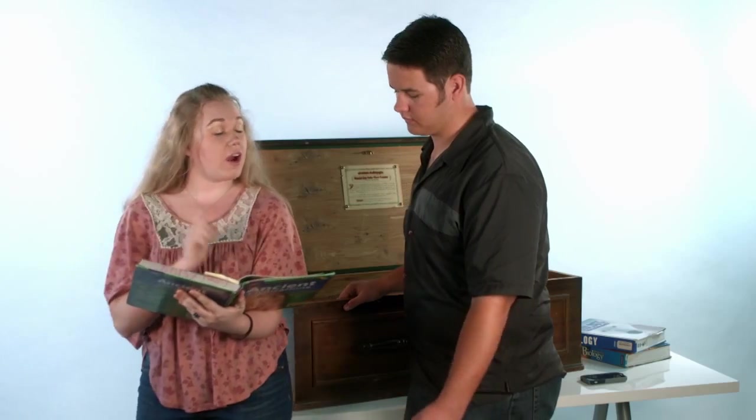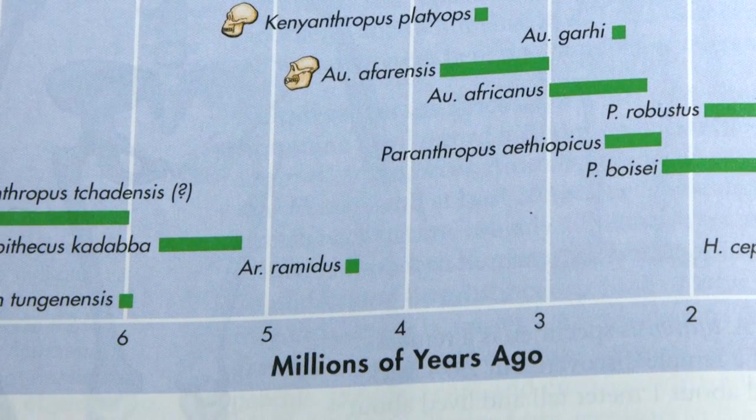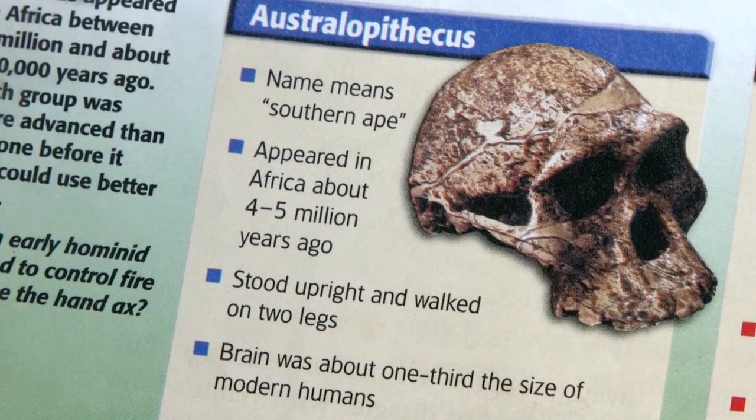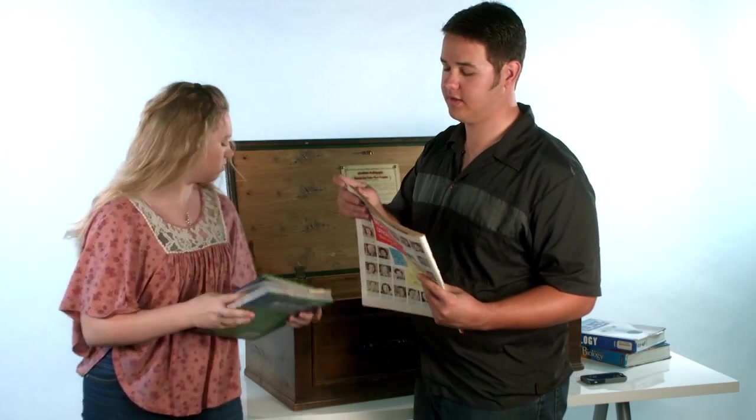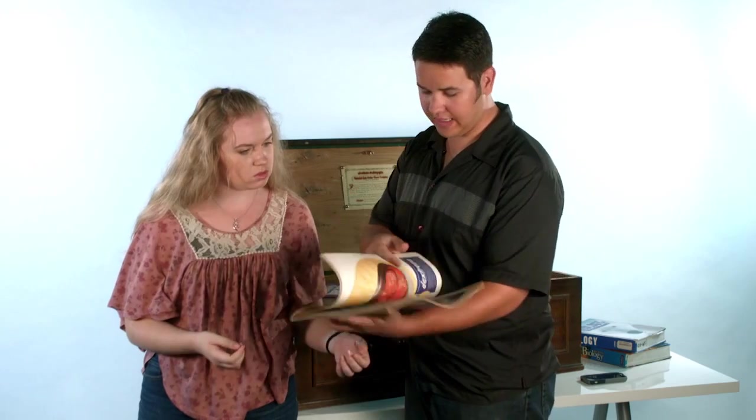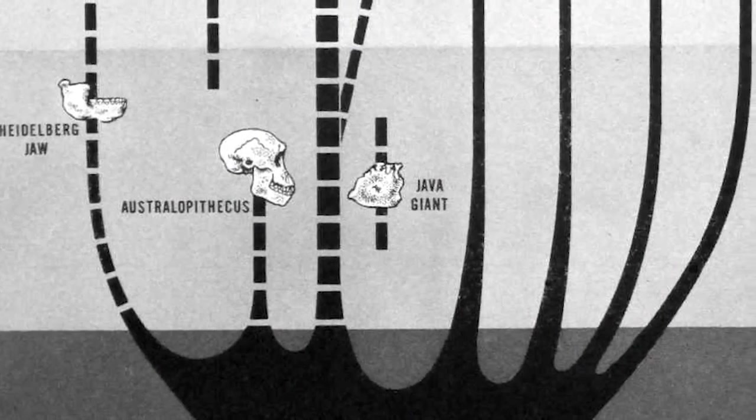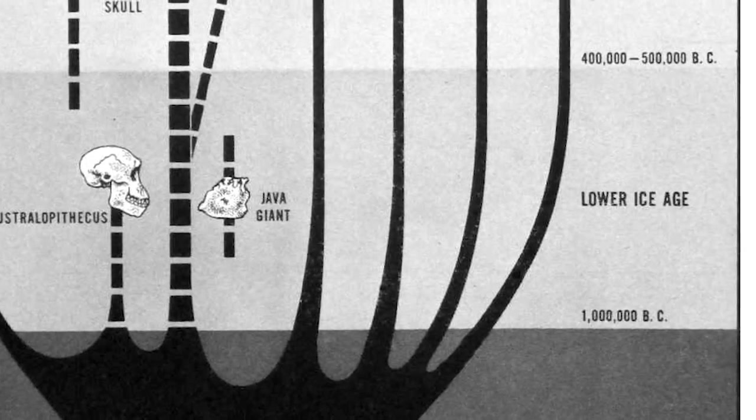In our book they say Australopithecus afarensis evolved 3.8 to 3 million years ago. But in the sixth grade book Australopithecus evolved 4 to 5 million years ago. Now look at this. This is an old 1951 Life magazine publication. According to this, Australopithecus lived a million to 500,000 years ago. Wow, that's different by a few million years.